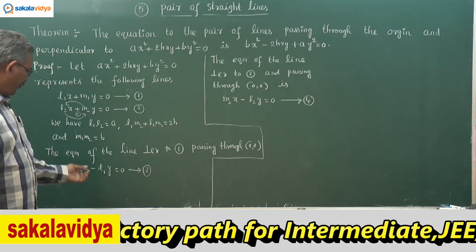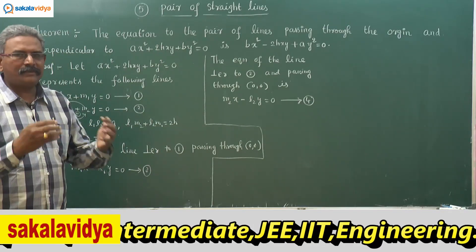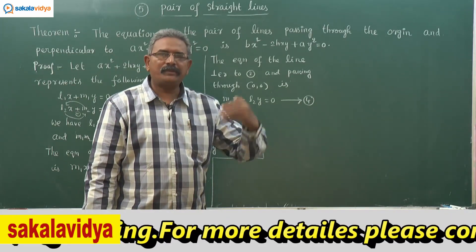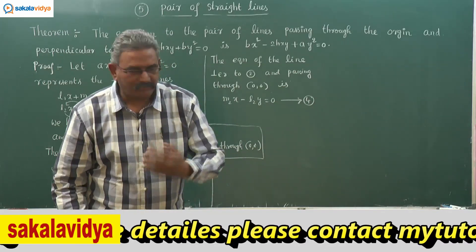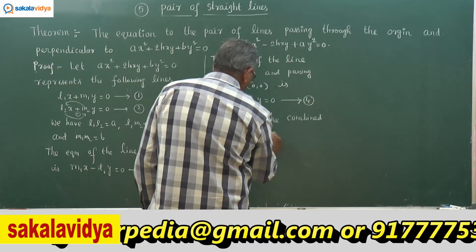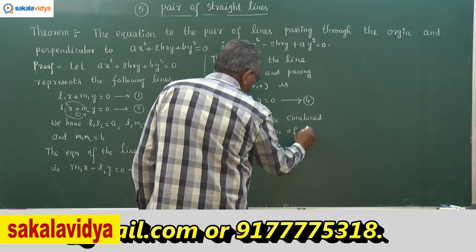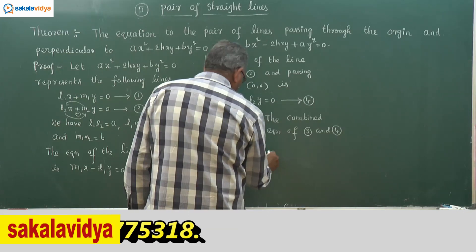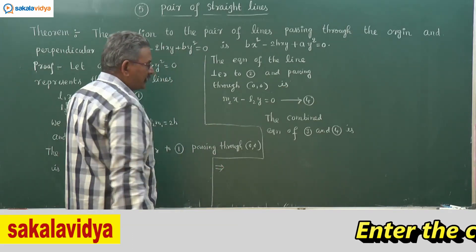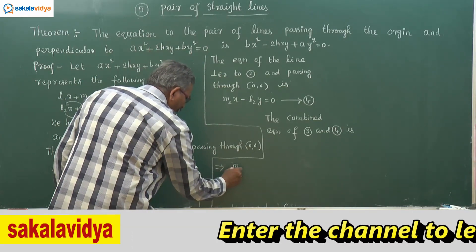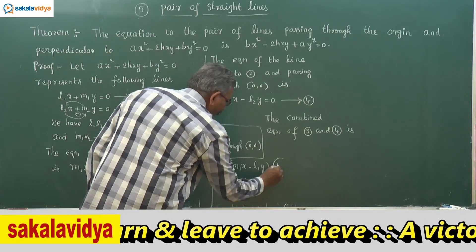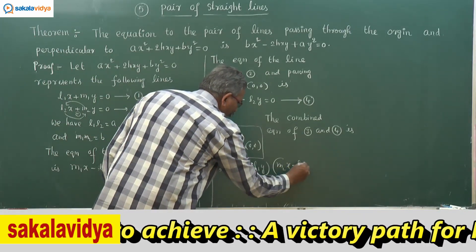Now we need to find the combined equation of equations 3 and 4. To get the combined equation, we multiply them together and simplify, then replace the respective values of l₁l₂, l₁m₂ + l₂m₁, and m₁m₂. The combined equation of 3 and 4 is: (m₁x - l₁y)(m₂x - l₂y) = 0.